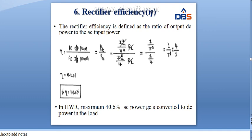Rectifier efficiency is defined as the ratio of output DC power to AC input power: η = P_dc/P_ac. We know P_dc = Im²/π² × RL and P_ac = Im²/4 × RL. Dividing gives efficiency = 0.406, that is 40.6 percent. In the half-wave rectifier, maximum 40.6 percent of AC power gets converted to DC power; the remaining 60 percent is wasted.